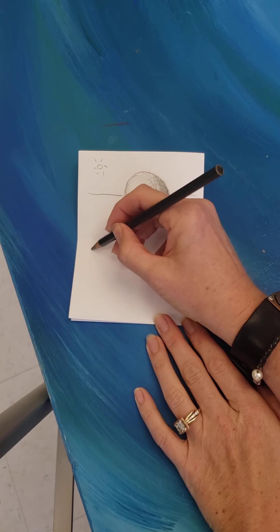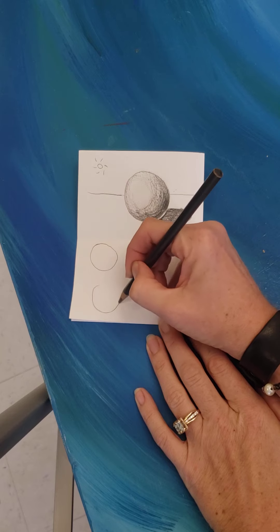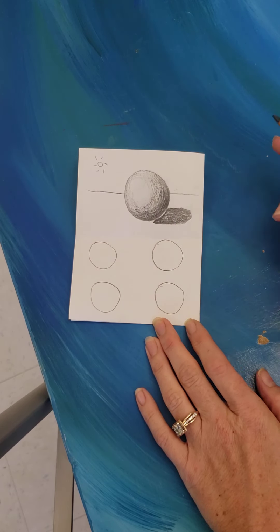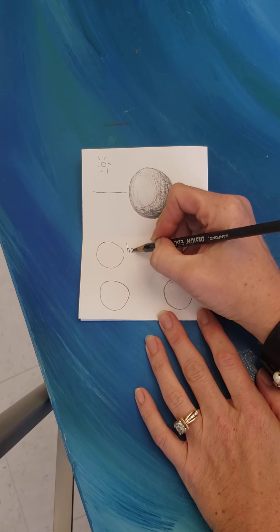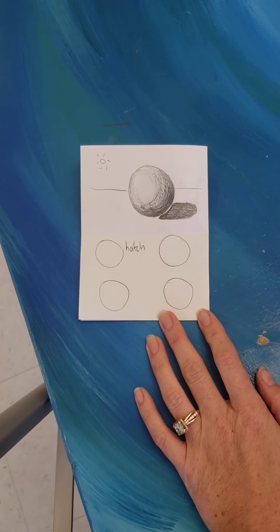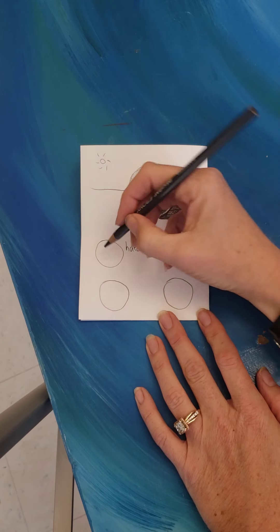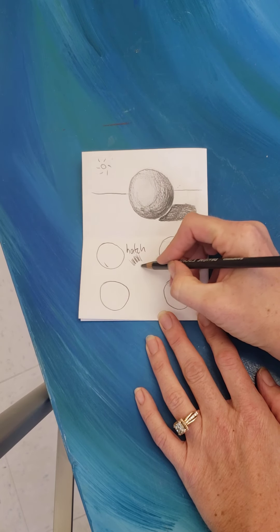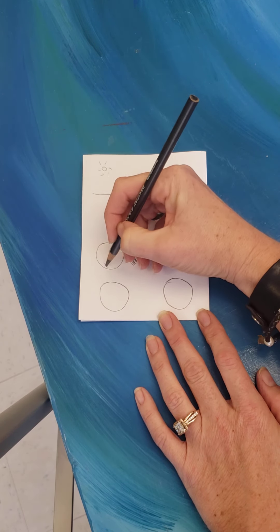We are going to draw four circles in today's prompt. And the first one you're going to write hatch next to. We're going to use different textures to add value to our spheres today. Hatching is just straight lines going in one direction. It can go in whatever direction, but they all go together.